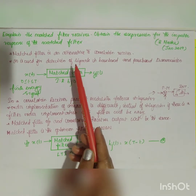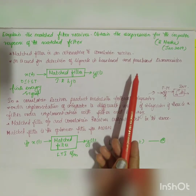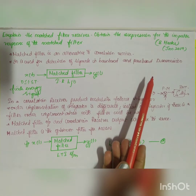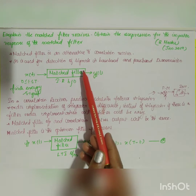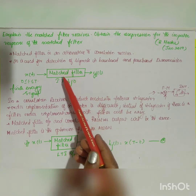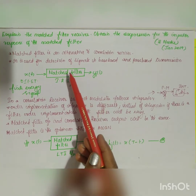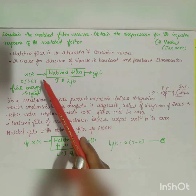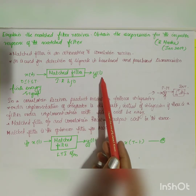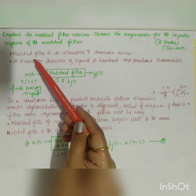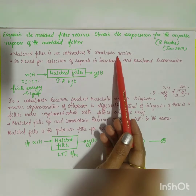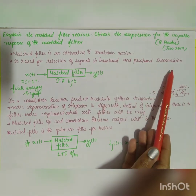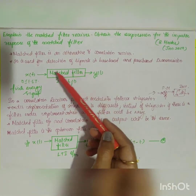The next question is: explain the matched filter receiver and obtain the expression for the impulse response of the matched filter. This is asked for 8 marks, January 2019. A matched filter is an alternative to the correlator receiver — the output of the correlator receiver and the matched filter are going to be the same. The matched filter is used for detection of signals in baseband and passband transmission.